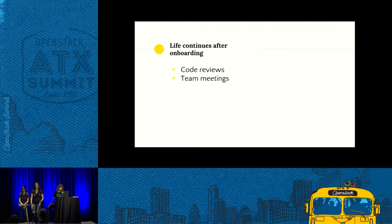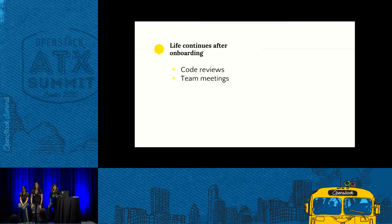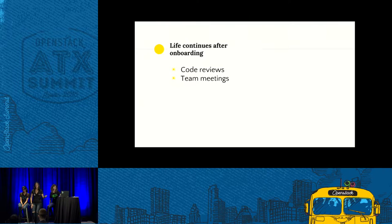What happens after you submit your first contribution? You have to understand how code reviewing works. You see Jenkins put a minus one on your patch and don't understand why. You see comments from reviewers asking you to change things, and you don't know how to amend your patch or keep going in discussions with reviewers. And how do you communicate with the community? You have to learn about IRC, weekly meetings, mailing lists, how to start a conversation, whether this is the right place to ask. There are so many things.